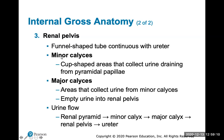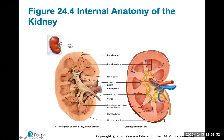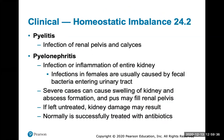The renal pelvis is the funnel-shaped tube continuous with the ureter. Minor calyxes collect urine draining from the papilla of the pyramid, and two or more minor calyxes come together to form a major calyx, which collects urine from the minor calyxes and drains it into the renal pelvis. The renal pelvis then exits out through the ureter.